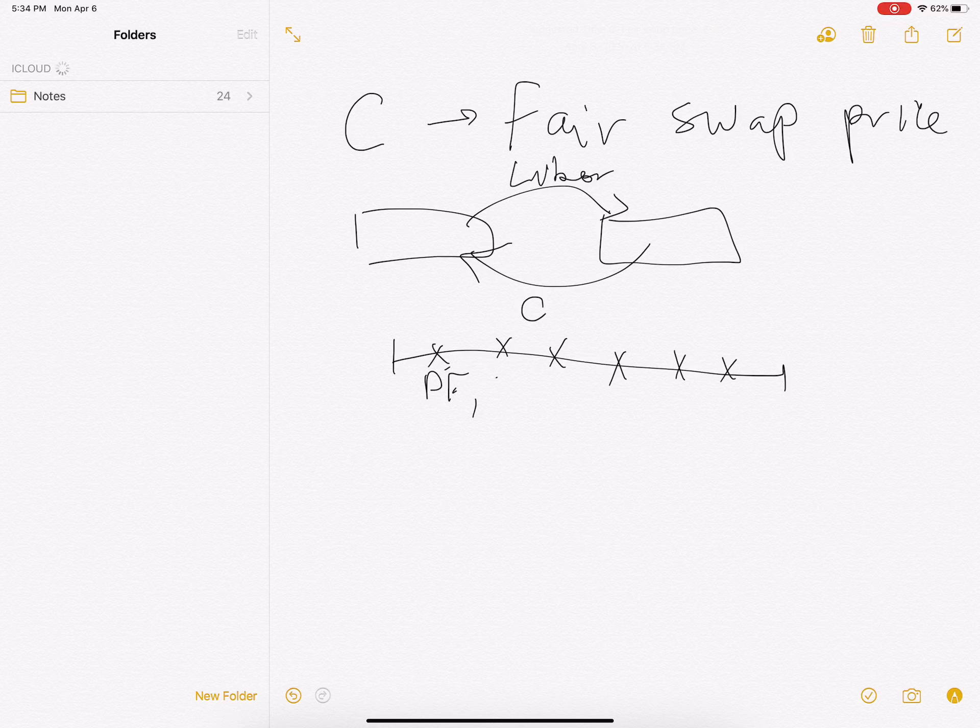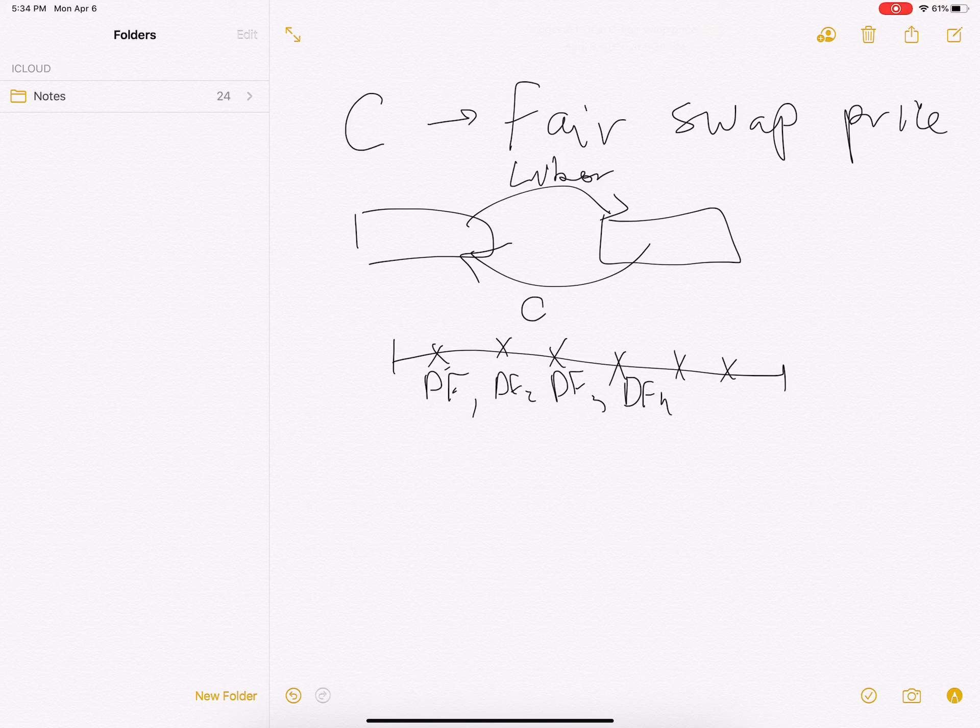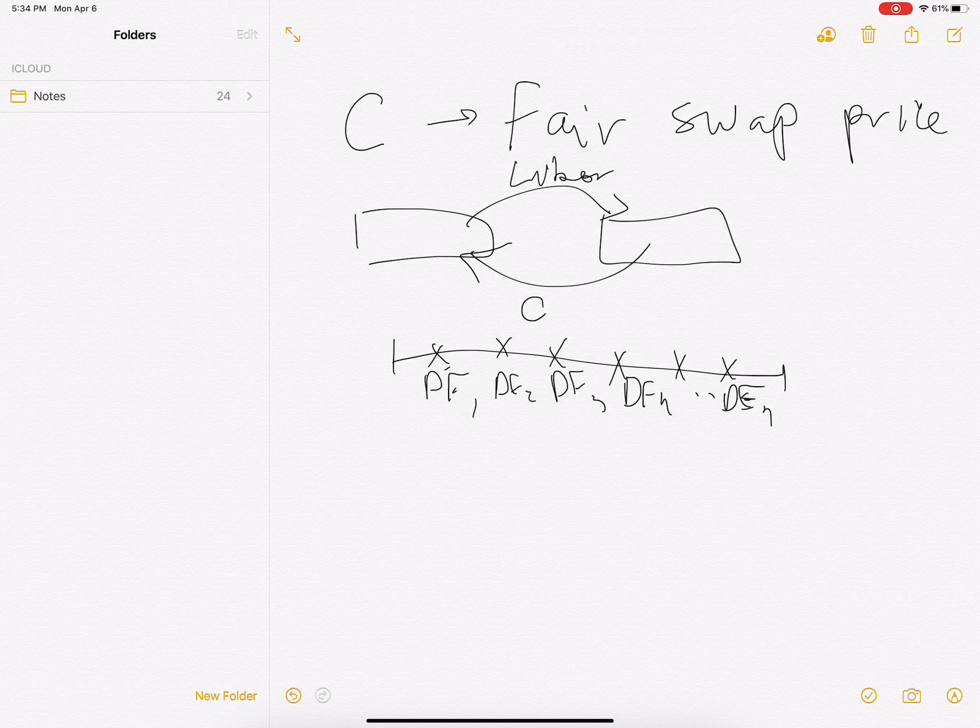Here are my discount rates for the different points in time. Now I'm going to use the discrete version of the model. So what I want to do is find C such that the market value of the LIBOR leg equals the market value of the fixed leg.